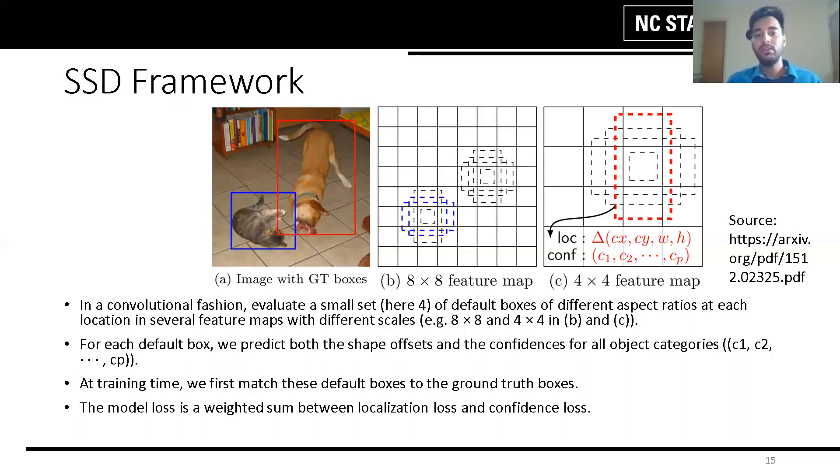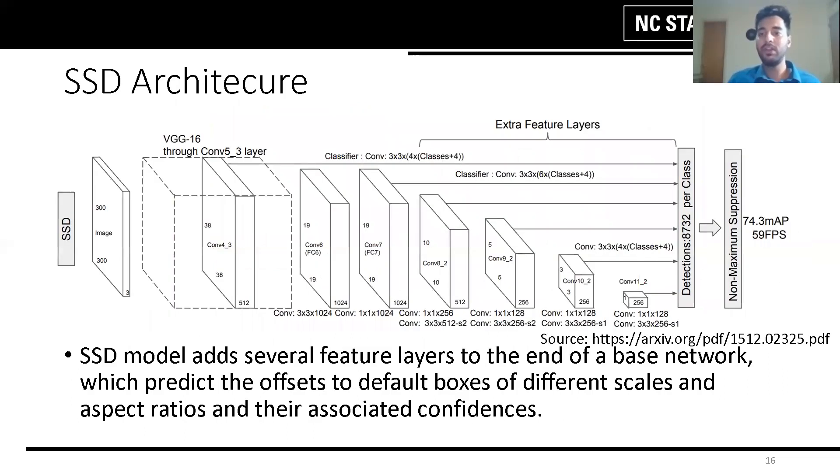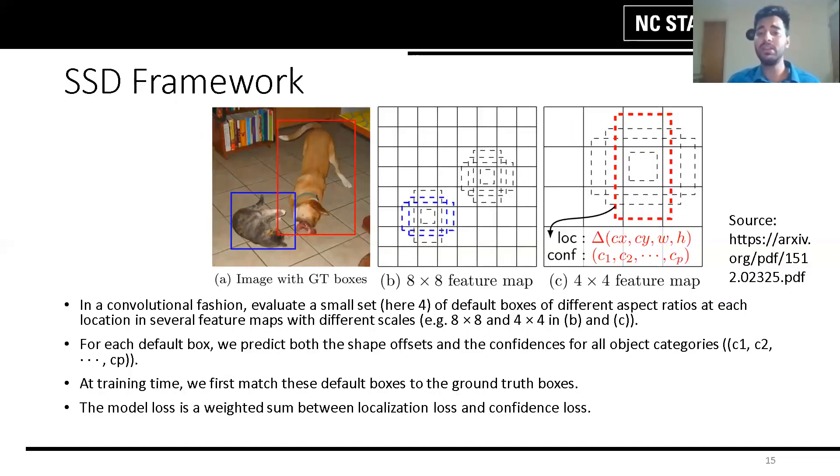Here the framework matches two default boxes with cat and dog which are treated as positive and the rest is negative. In a convolutional fashion, we evaluate four default boxes of different aspect ratios at each location in several feature maps with different scales.